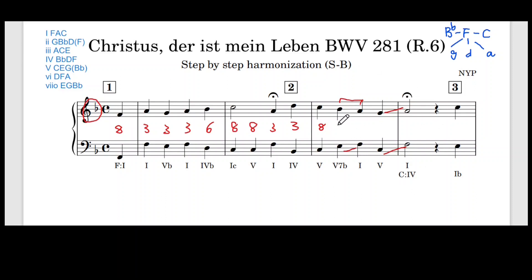Double check with the intervals. If you can read the intervals visually, you don't have to write out the numbers. But if you are a beginner not very sure about how to check parallels, you can do it this way. C to G is a five, then F to A is a three. So no parallel fifths, no parallel octaves.